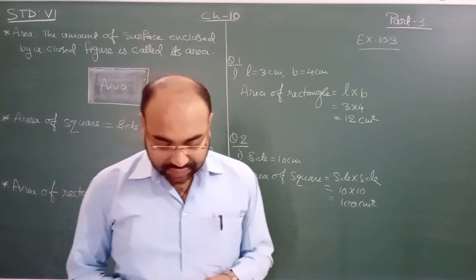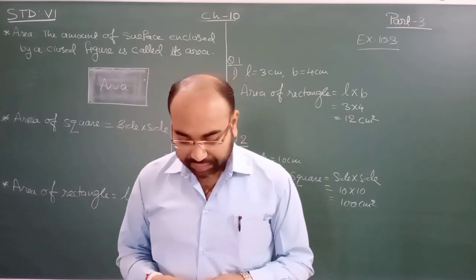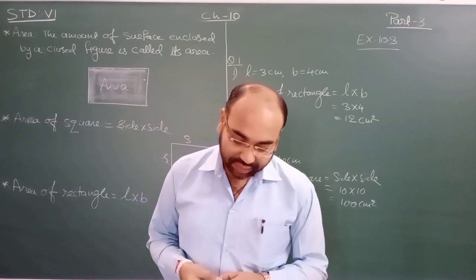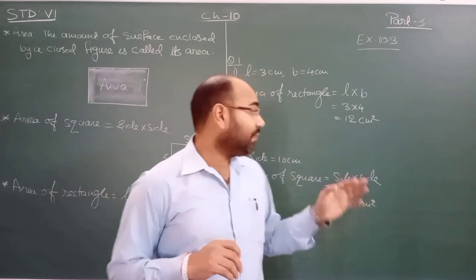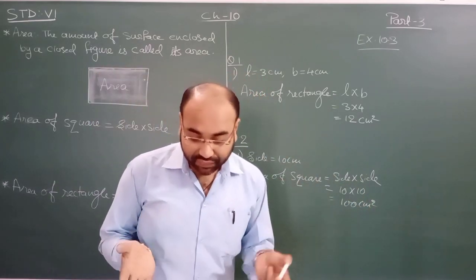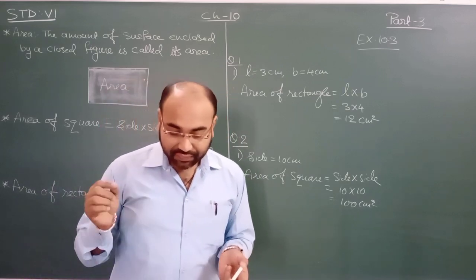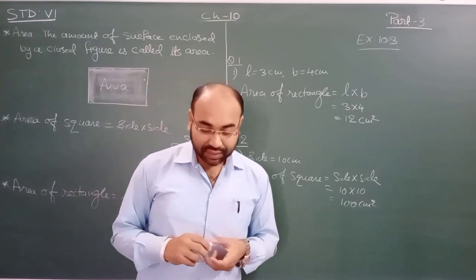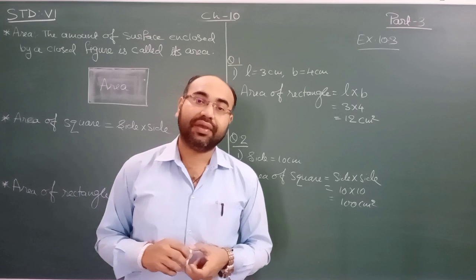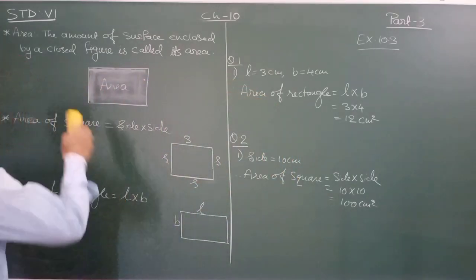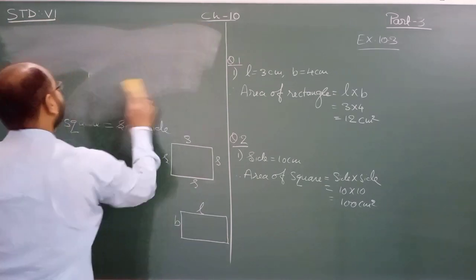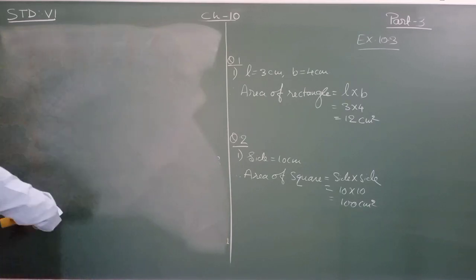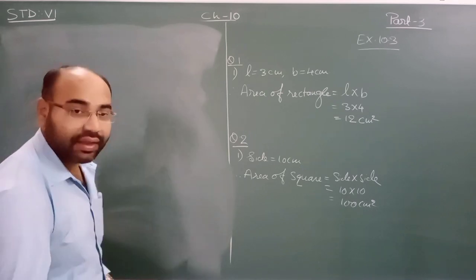Question number four: it is given that the area of a rectangular garden is 300 square meters and its length is 50 meters. We have to find the width of the garden. Till now we found area when length and breadth were given, but here the area is already given and we need to find the breadth by applying the formula for area of rectangle.